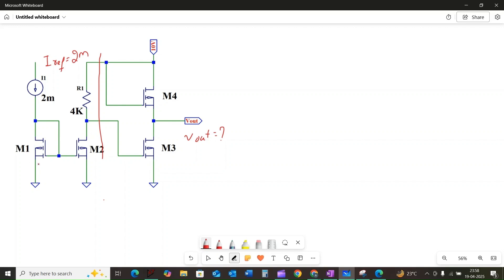This is equal to 2 milliamps. Since M2 is in the same mirror, the current flowing through MOSFET M2, which we can call ID2, will also be equal to 2 milliamps.